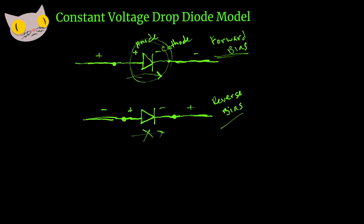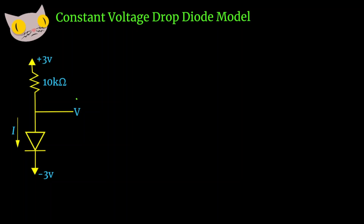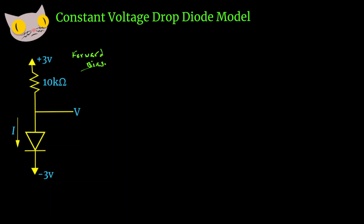Now that we know this, let's go ahead and solve a couple problems. For the constant voltage drop diode model, our voltage drop is going to be somewhere between 0.6 volts and 0.8 volts, so we're going to use 0.7 volts. Here we have a forward bias configuration — our positive side is hooked to the positive lead and our negative side is connected to the negative lead. For the voltage drop model, our voltage drop is going to be about 0.7 volts; that's the constant value the model assumes.